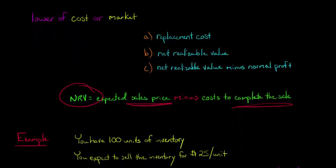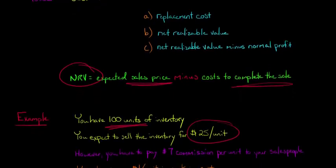So let's just walk through a quick example and make it a little easier to understand. So let's say that you have 100 units of inventory sitting on the shelves and you expect, you think, that you're going to sell this inventory for $25 a unit. That's our expected selling price. That's our expected sales price. And so now we need to know about costs necessary to complete this sale and see if there's anything we need to deduct.